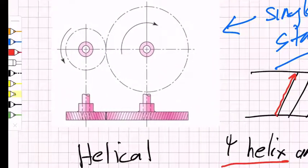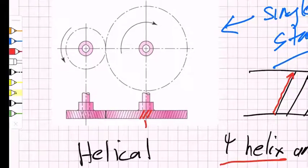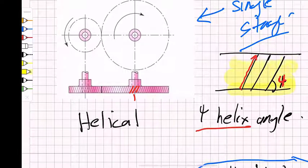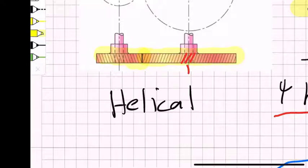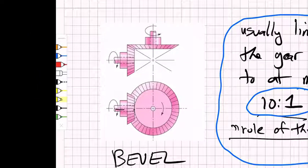Moving to helical gears, the teeth are cut at an angle with respect to the axis of rotation — that angle is the helix angle psi. For the teeth to mesh, both gears must be cut at angle psi, but the teeth are inclined in opposite directions on each gear. Notably, helical gears not only transmit torque but also generate axial loads along the axis of rotation.